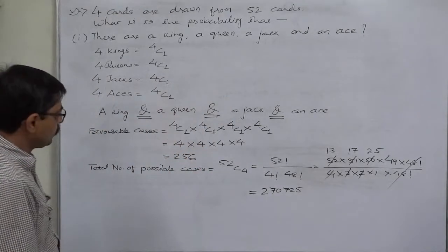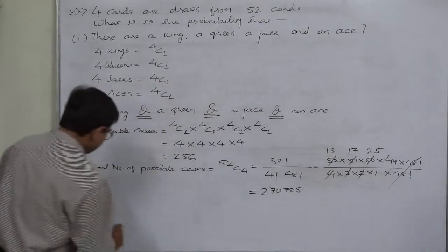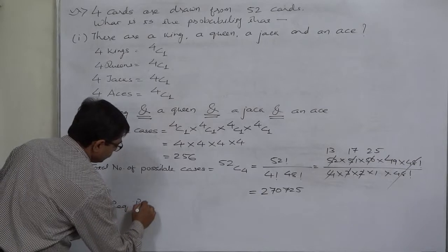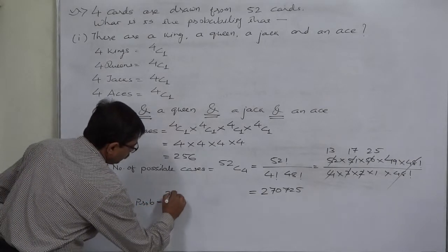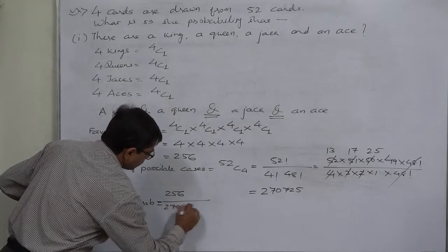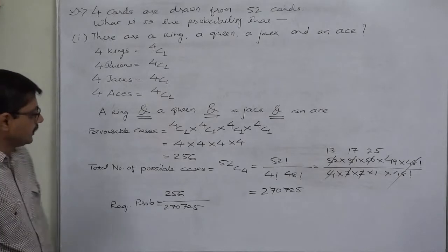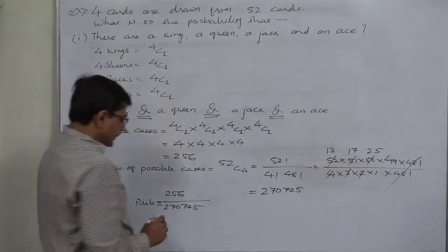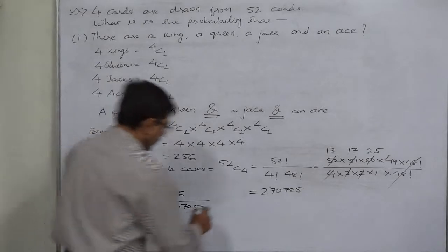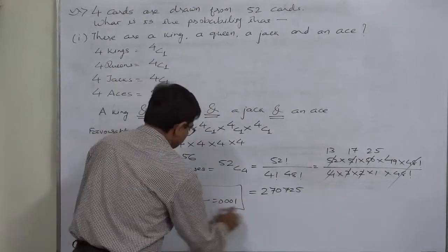So four cards out of 52 cards can be drawn in 270,725 different ways. This is our total number of possible cases. So the required probability comes to 256 divided by 270,725. You can simplify using a calculator — the answer is approximately 0.00094.